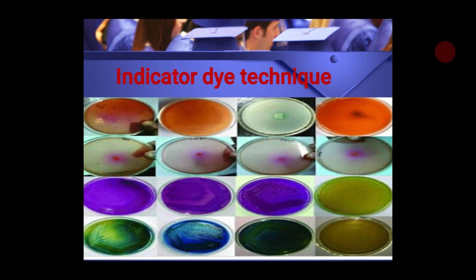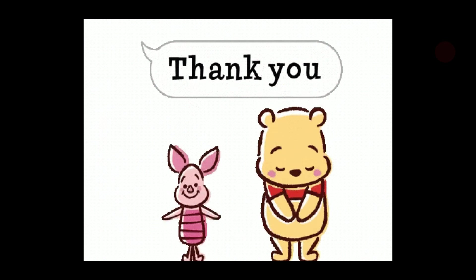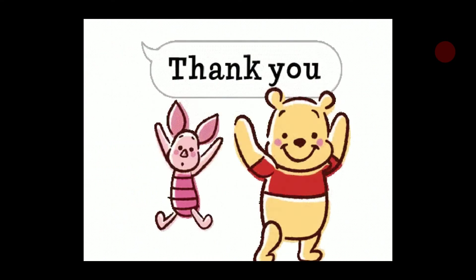The change in color of the dye in the vicinity of a colony suggests that colony's capacity to produce a particular product — organic acids or amines. Such colonies should be subcultured to make a stock culture, and further screening methods should be followed to confirm whether the desired product is produced. That covers all four primary screening techniques. In the next class we will see secondary screening techniques and the methods employed there.